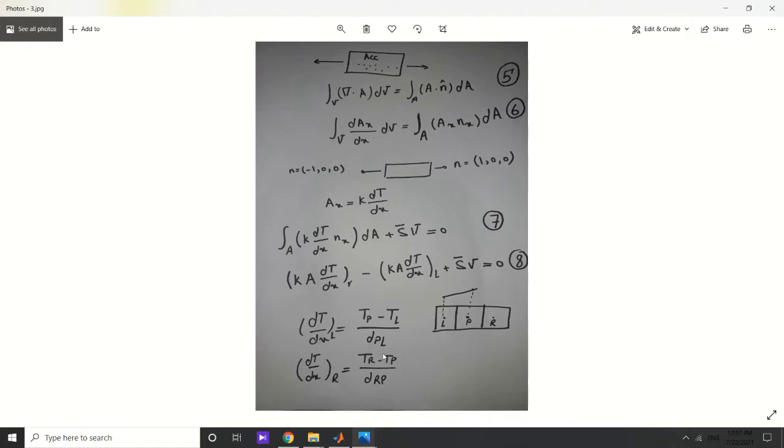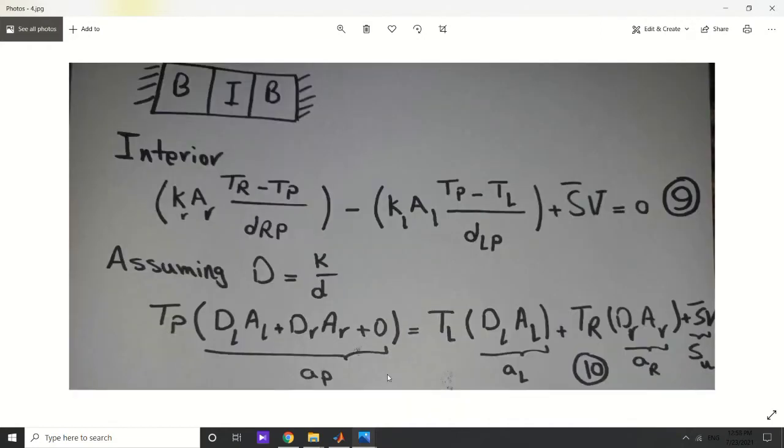Now it's time to solve the equation for two kinds of cells that we usually deal with: the boundary cells and interior cells. For the interior, we replace our approximation, do some mathematics, assume d equal to k over delta, and finally get this.